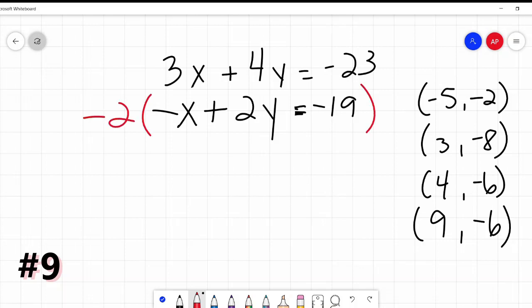Okay, so -2 times -x is 2x, -2 times 2y is -4y, and -2 times -19 is positive 38. I'm going to rewrite the other equation right above it.